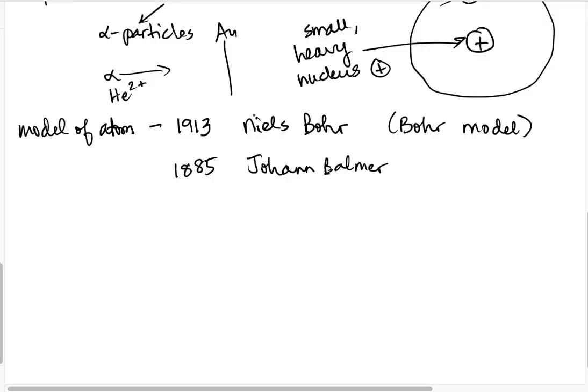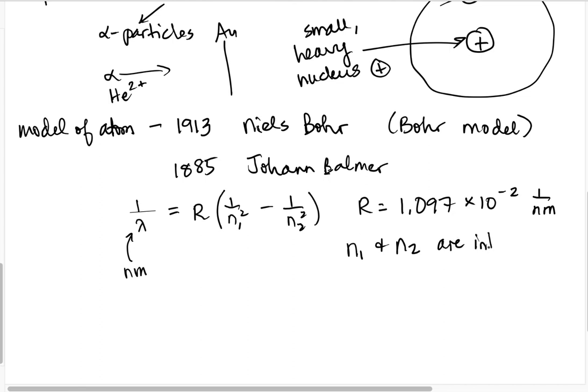So he noticed that each gas had a little bit of a different arrangement of lines. Now, what he discovered was that with hydrogen, he could come up with an equation for figuring out what the position of those lines were, so what the wavelength was, based on two integers that he squared in the denominator. So let's go ahead and take a look at what that equation was now. Alright, so Balmer's equation that he came up with was the wavelength, 1 over the wavelength in nanometers, is equal to r times 1 over n1 squared minus 1 over n2 squared. And r was a weird constant, which was 1.097 times 10 to the minus 2, 1 over nanometers.